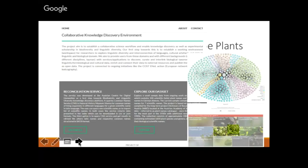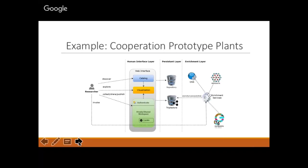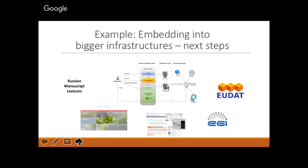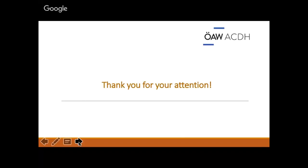One of the projects for using this data is the project for biodiversity and linguistic diversity, now implemented in the Academy of Sciences. The aim of this project is to collect all the plant names that can be collected in general, and data from old manuscript lexicals is of great importance, because sometimes we cannot find such data in any other materials. We can then use this data for Wikipedia and for other structures such as EEGI. Thank you for your attention.